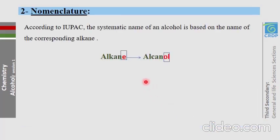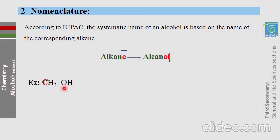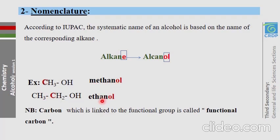The second point is how to name alcohols. To name an alcohol, take the name of the corresponding alkane and replace the final 'e' with 'ol'. For example, the smallest alcohol: take the name methane and add 'ol' to get methanol. The next is ethanol. Note that the carbon atom connected to the functional group is called the functional carbon.